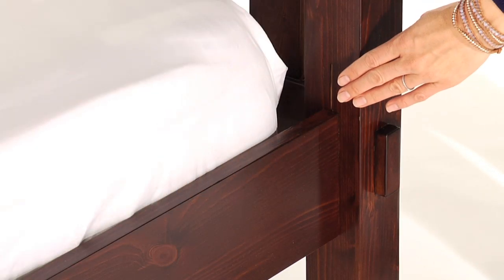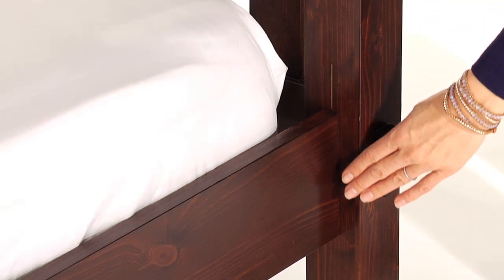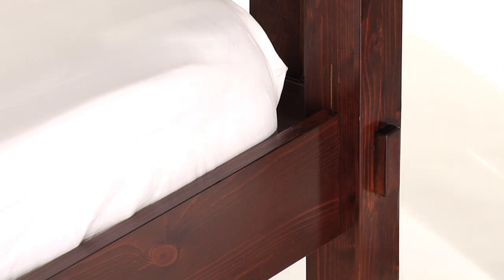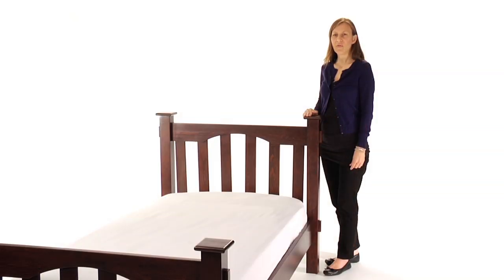The mattress platform can be raised to accommodate our optional trundle or lowered to create a comfortable height for small children. The slat roll foundation allows our beds to be used with or without a box spring.